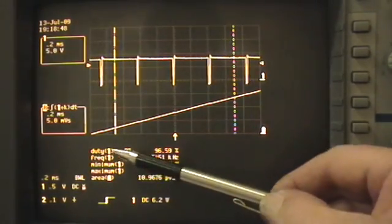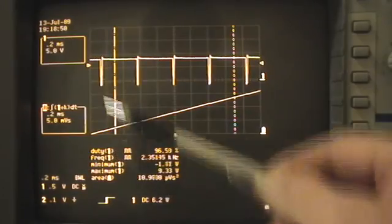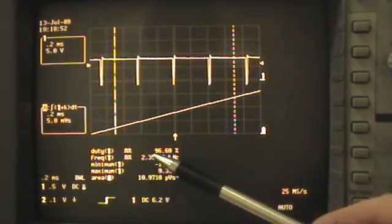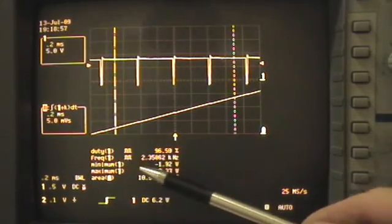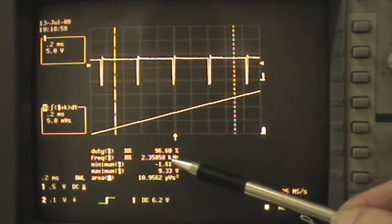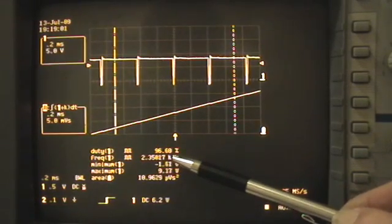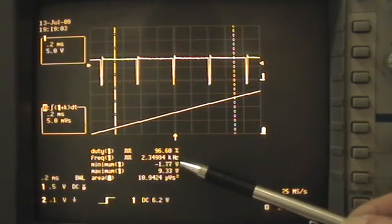Now, down here, in the parameters, I have the duty cycle of trace 1 displayed right there. You can see it's 96.59% right now. The frequency of trace 1, 2.350 kHz, almost 2400.